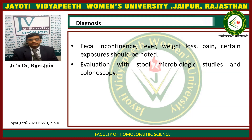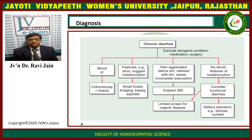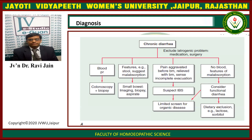Evaluation of the stool, microbiological studies, and stool growth should be assessed. We have to ask about fecal incontinence, fever, weight loss, pain, and certain exposures. In chronic diarrhea diagnosis: if iatrogenic problems, medications, and surgery are excluded — if there is blood, proceed with colonoscopy and biopsy. If there are features of malabsorption, then small bowel imaging, biopsy, and aspiration are required. If there is pain relieved with defecation and a sense of incomplete evacuation, suspect IBS.